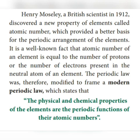This form of periodic table is called the long form of periodic table, also known as the modern periodic table. This is the main difference between modern periodic law and Mendeleev's periodic law. The modern periodic table is fully based on atomic number, while Mendeleev's periodic table is based on atomic mass.